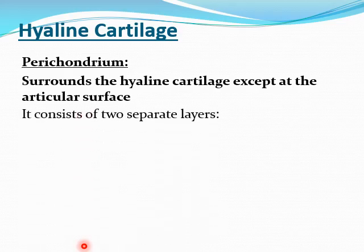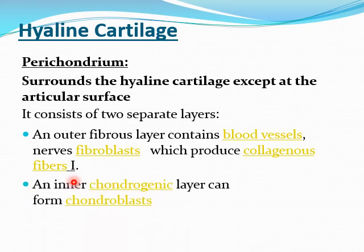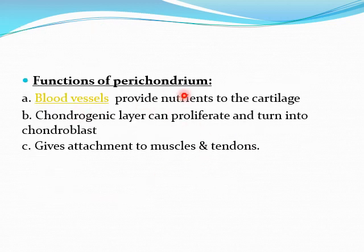The perichondrium consists of two layers. The outer fibrous layer contains blood vessels — since cartilage itself is avascular, this blood supply nourishes the cartilage by diffusion. It also contains nerves and fibroblasts, which produce collagen type 1. The inner chondrogenic layer gives rise to chondroblasts. Functions of the perichondrium: the blood vessels in the outer fibrous layer provide nutrition; collagen type 1 provides attachment to muscles and tendons; and the inner chondrogenic layer can proliferate to form chondroblasts.